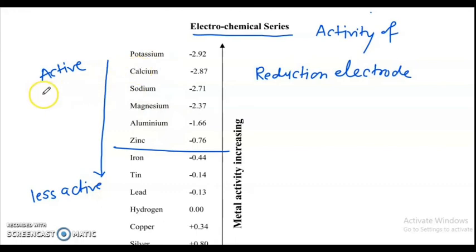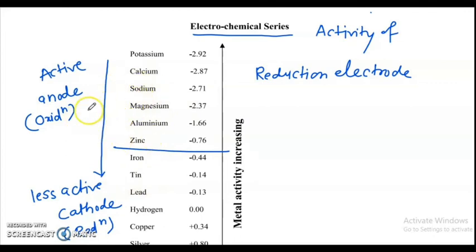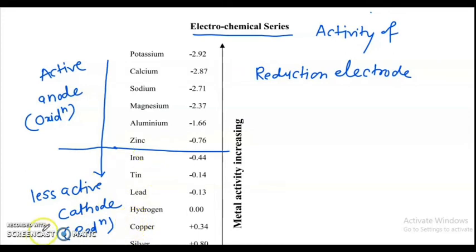Active metals act as anode where oxidation takes place. The metals present at the top, like zinc, are prone to corrosion, whereas the elements present at the bottom of the series get protected. This position of the metal in the series also affects the rate of corrosion.